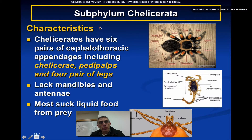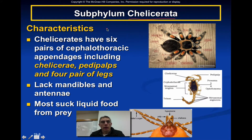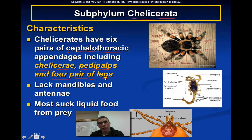Now narrowing our focus to the subphylum Chelicerata — which includes spiders, scorpions, mites, ticks, and horseshoe crabs — chelicerates have six pairs of cephalothoracic appendages, including the chelicerae and pedipalps, plus four pairs of walking legs. They tend to lack mandibles and do not have antennae. Most chelicerates suck liquid food from their prey.